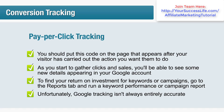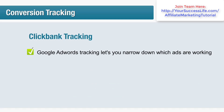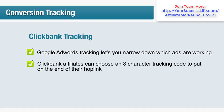Let's discuss Clickbank tracking. Google AdWords tracking lets you narrow down which ads are working, but what if you're using several different promotional methods for each product? How do you compare the value of a pay-per-click ad group versus your newsletter advertising? The answer is Clickbank's tracking. Clickbank affiliates can choose an eight-character tracking code to put at the end of their hop link. The code might represent a particular keyword group, so that when you view your Clickbank analytics you can see every sale from that ad. For instance, you might assign the ID 'QUIT0988' to your quit smoking ad group and 'STOP0098' to your stop smoking ad group.